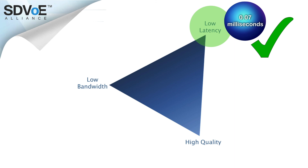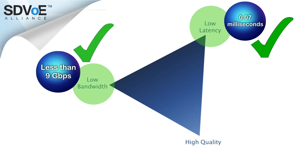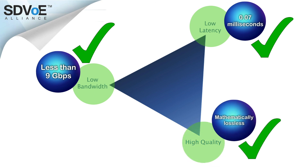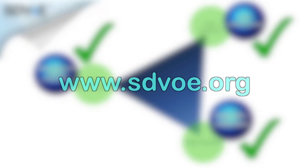SDVoE is focused on the real-world scenario of AV and IT convergence, and thanks to this dramatic increase in compression efficiency, bandwidth is always less than 9 gigabits, leaving at least 1 gigabit per second for data traffic. Finally, with such a low reduction ratio, SDVoE quality is mathematically lossless for most video content, transforming the matrix switch by marking its position on the codec triangle as the closest to HDMI itself. To learn more about this incredible technology, visit SDVoE.org.